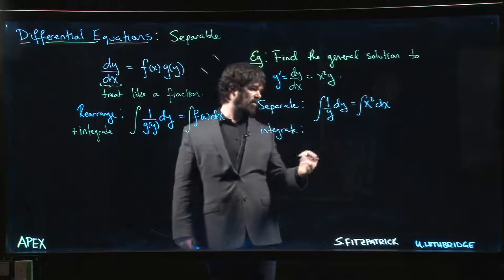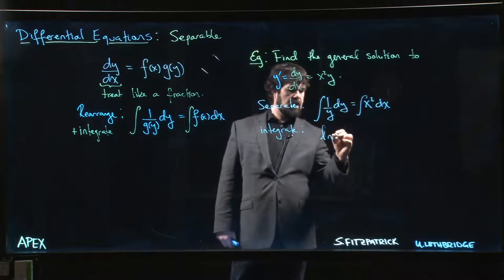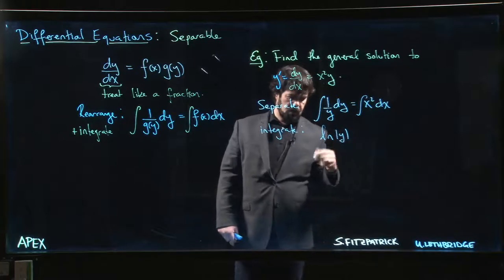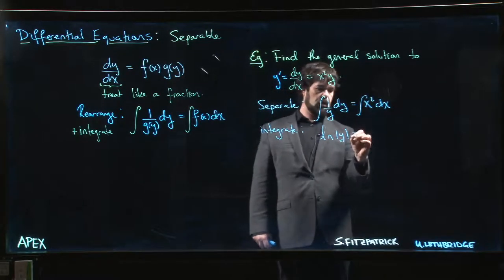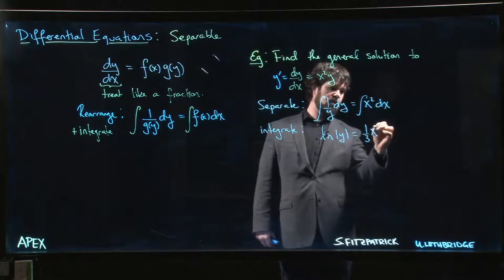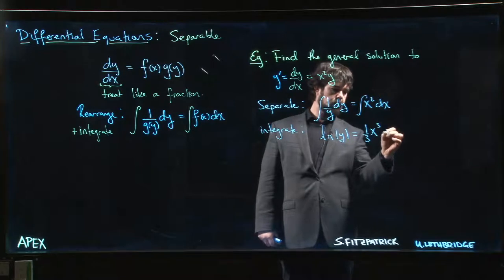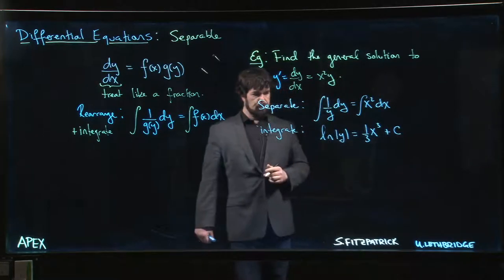The antiderivative for 1 over y is natural log—again, if you want to put the absolute value in, we can talk about how to deal with that in a second. On the other side it's just power rule: 1/3 x cubed, possibly plus some constant.